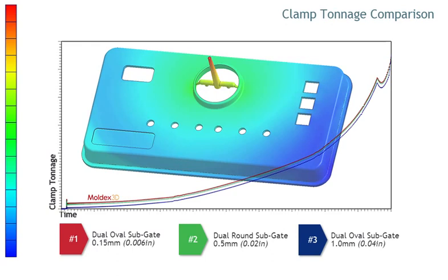Here, you can see that during the filling process, the clamp tonnage results are quite similar. Although slightly higher for the smaller round and oval gates, it is not a significant difference.